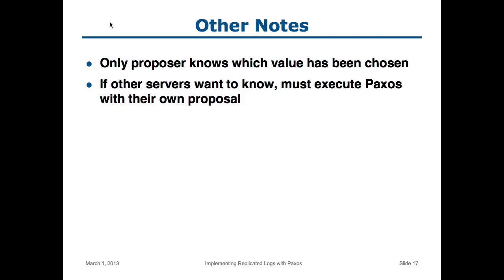There's one other disadvantage of the basic Paxos protocol: once a value has been chosen, only one server knows what that value was — the server whose proposer ran through the whole protocol. The acceptors have no idea whether a value they store has actually been chosen or not. So if some other server wants to know what value was chosen, the only way it can do that is to run the protocol itself — start off with a default value, run the protocol, and at the end you know the answer. So this completes the description of the basic Paxos protocol.